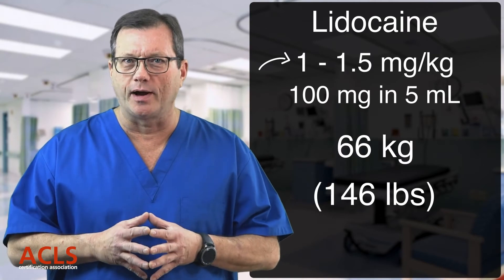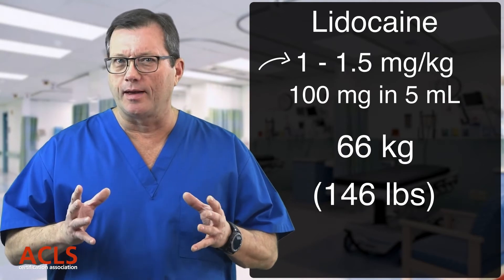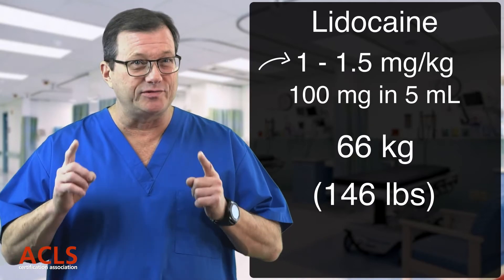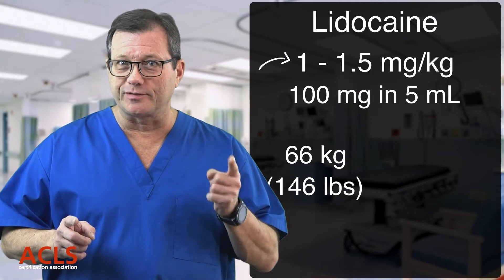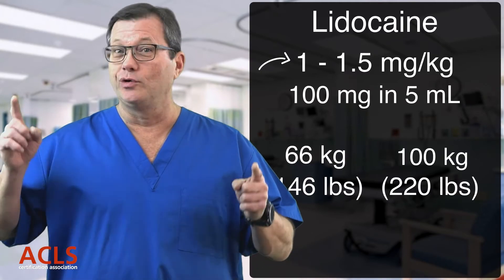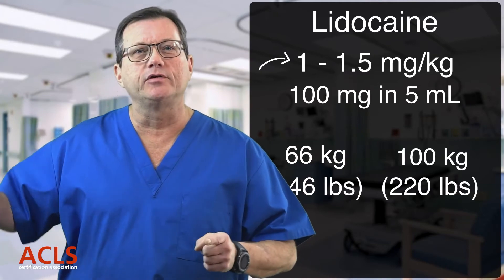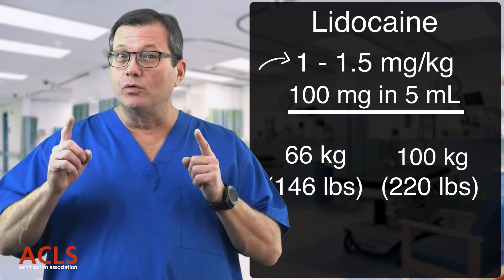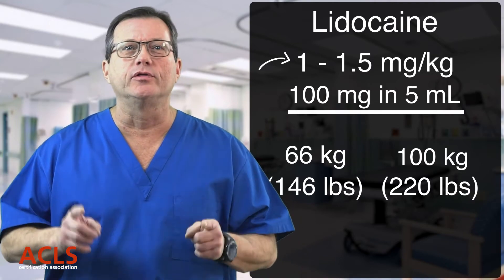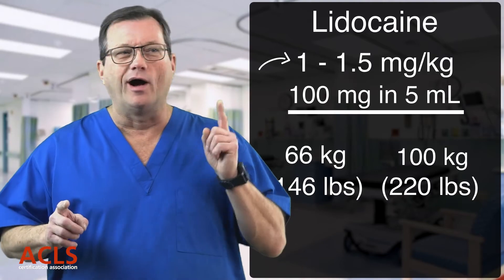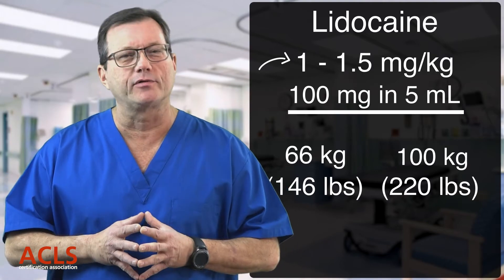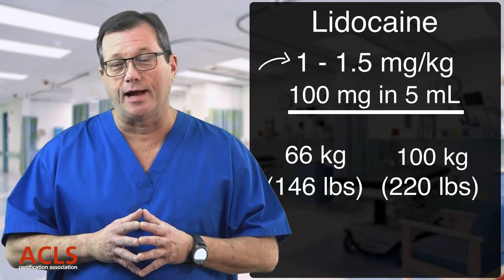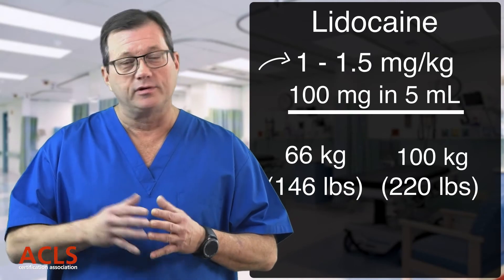So what does that mean? If your adult patient weighs between 146 pounds and 220 pounds, administer the whole 5 ccs — 100 milligrams — and you will be dosing that patient within the recommended parameters of 1 to 1.5 milligrams per kilogram. Give the whole thing. For elderly patients, you may want to cut the dose in half; follow your local protocols.